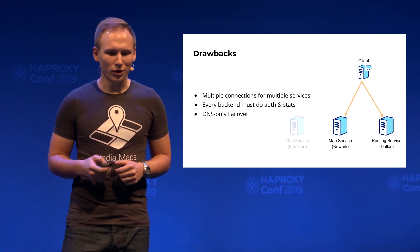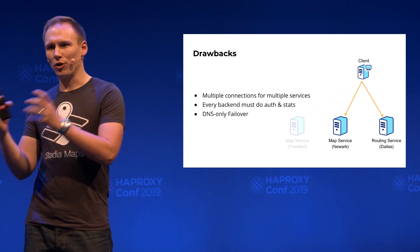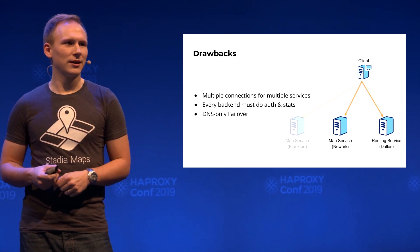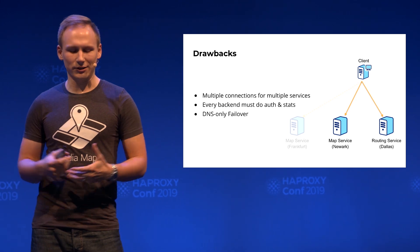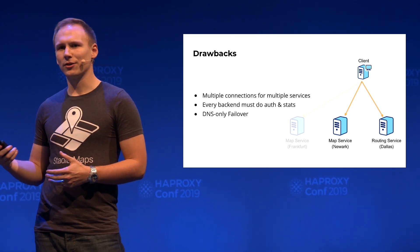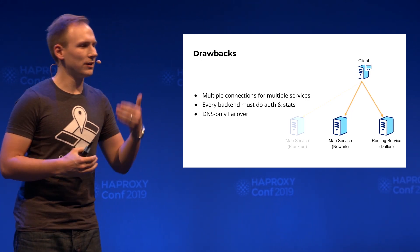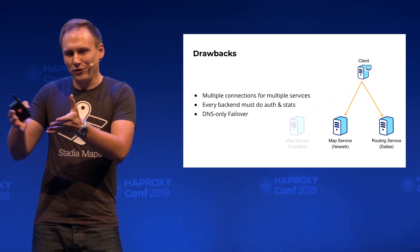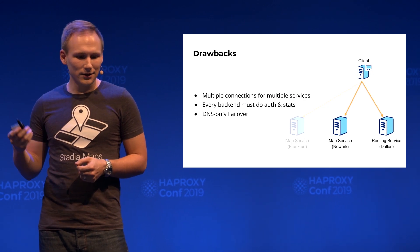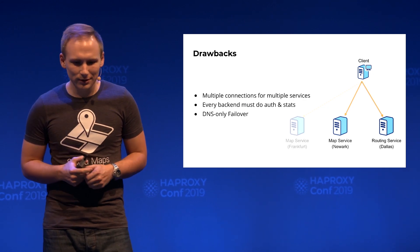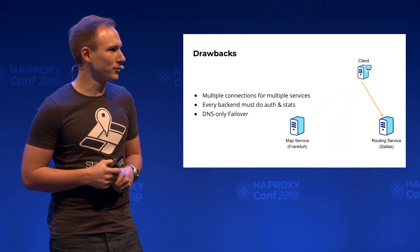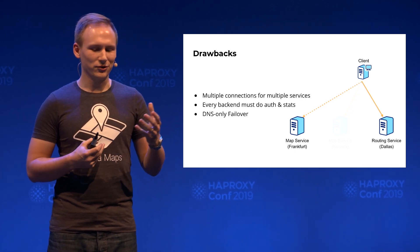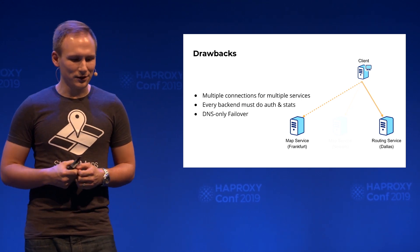This comes with a few drawbacks. If one client needs to talk to multiple services, they have to connect to multiple backend servers, requiring multiple DNS connections, multiple TLS connections — that takes time and is complex from a client perspective. Every backend server has to know how to do everything a client request needs: authentication, authorization, quota enforcement. And with DNS-only failover, as we all know, DNS TTLs are more of a suggestion than a hard rule. If you set a 60-second TTL, clients might have requests fail for a minute, two minutes, or even an hour when a server goes down.